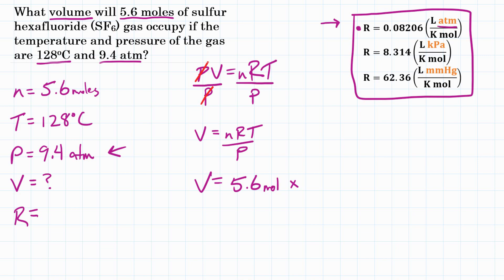So in our equation, we will put 0.08206. And the units for the universal gas constant are liters per atmosphere over Kelvin mole.